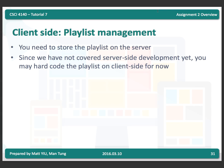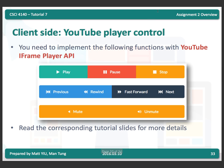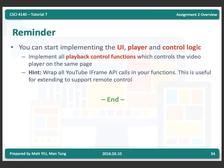For now, you don't need to store the playlist on the server since server-side development hasn't been covered yet — you can code the playlist on the client side for now. For YouTube player control, after today's tutorial you can start implementing the UI player and control logic on the same page without considering the remote part yet. A useful hint: wrap all YouTube iframe API calls in your own functions so you can extend your code to support remote control later more conveniently.